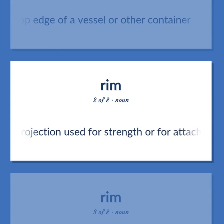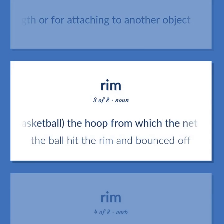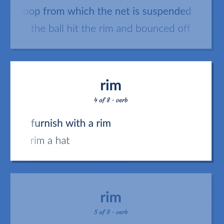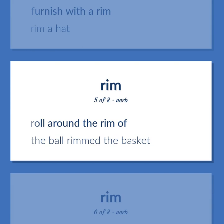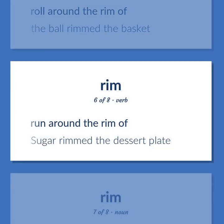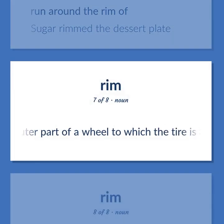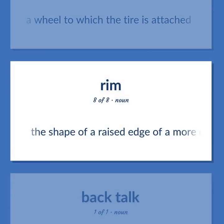Rim: A projection used for strength or for attaching to another object. Basketball: the hoop from which the net is suspended — "The ball hit the rim and bounced off." Furnish with a rim — "Rim a hat." Roll around the rim of — "The ball rimmed the basket." Run around the rim of — "Sugar rimmed the dessert plate." The outer part of a wheel to which the tire is attached. The shape of a raised edge of a more or less circular object.